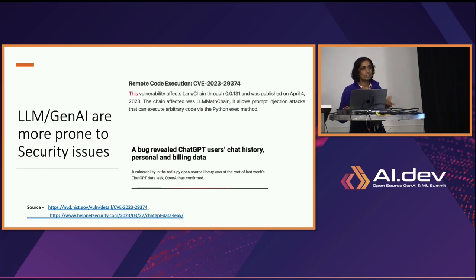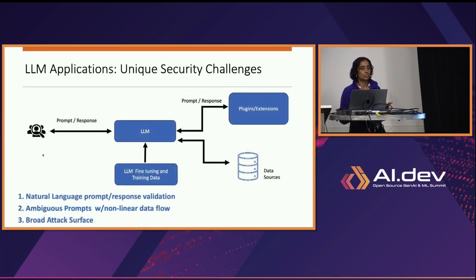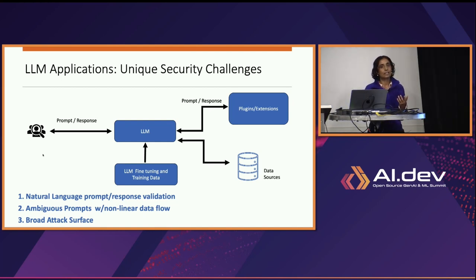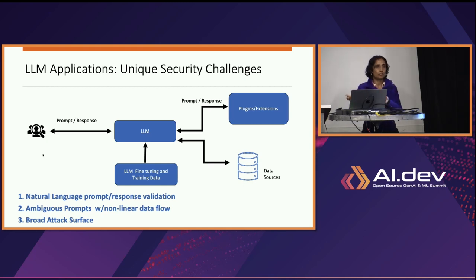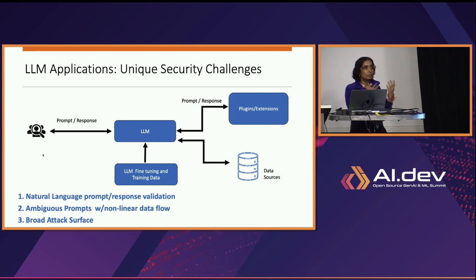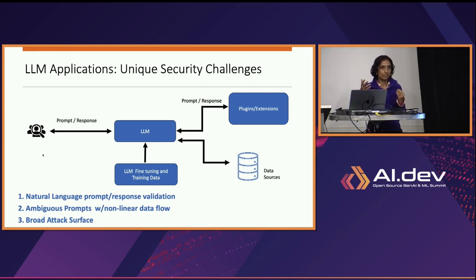What are some of these unique challenges? In traditional application security, the request-response is pretty structured. I can ask 'give me all my Kubernetes clusters,' and my security and identity system would know that it's me and only provide access to my Kubernetes clusters. However, with large language models, you have to convert this natural language into something which your identity and security can understand.